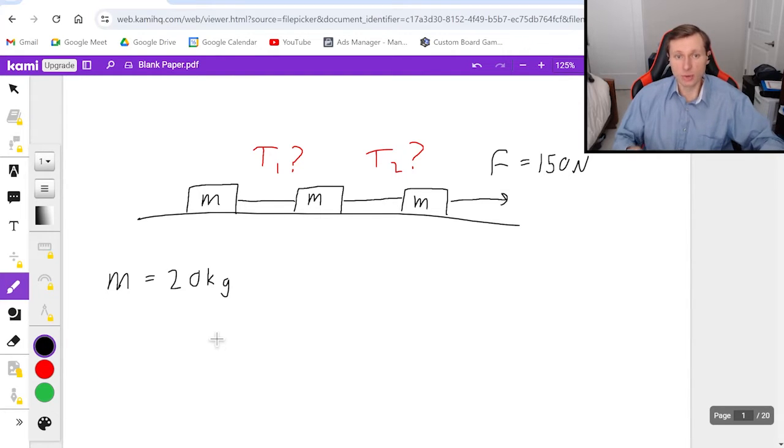Step one, free body diagrams for every box. So since these look identical, I need to label them somehow. I will be labeling them left, middle, and right.